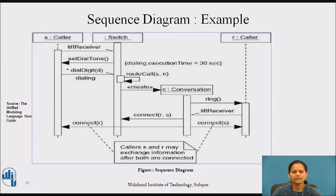The conversation object then tells the switch to connect the call, then tells both caller objects to connect, after which they may exchange information as indicated by the attached note.